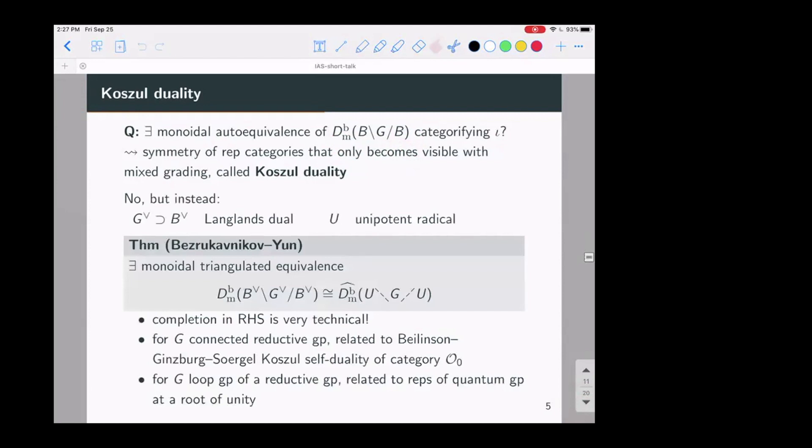So it turns out you cannot do this, but there's something even more interesting that happens. So this is not historically how it went, but there's a theorem of Bezrukavnikov, Yun, which says that the Hecke category for the Langlands dual group, G-check, is related to not the Hecke category of G, but some other rather technical category.